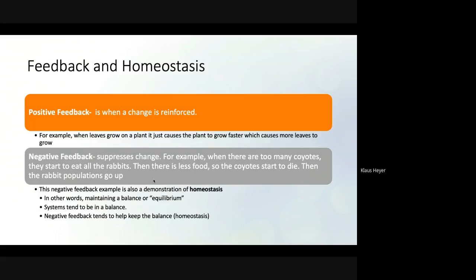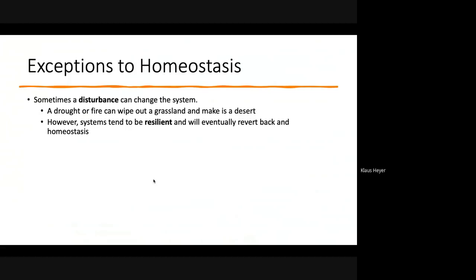Our bodies work the same way — insulin lowers blood sugar while glucagon raises it, keeping homeostasis. Negative feedback suppresses change and maintains equilibrium.